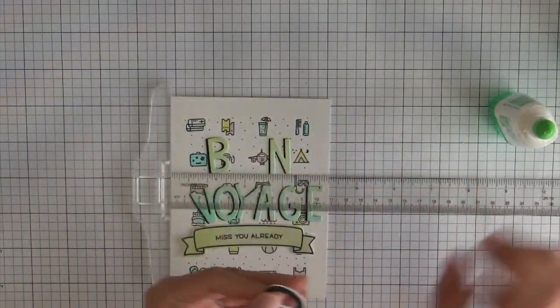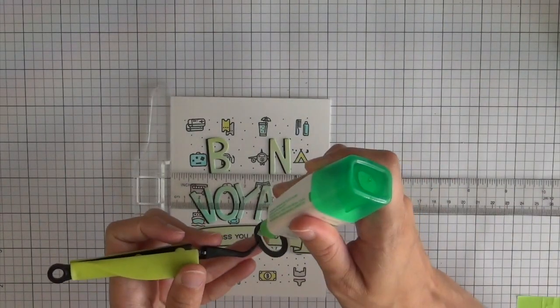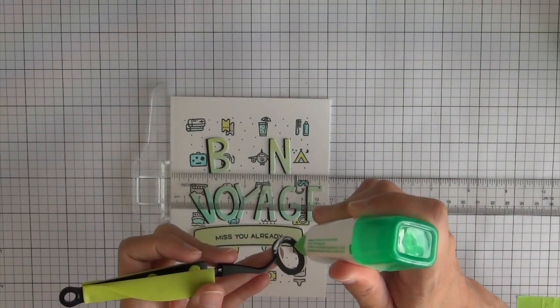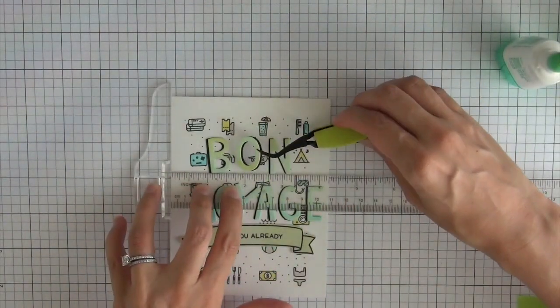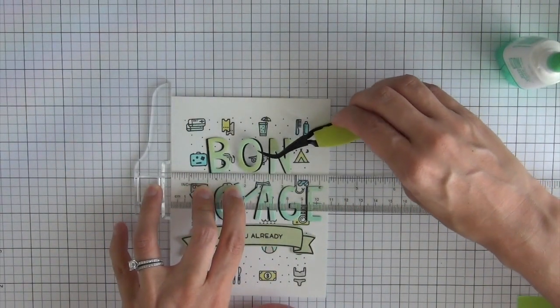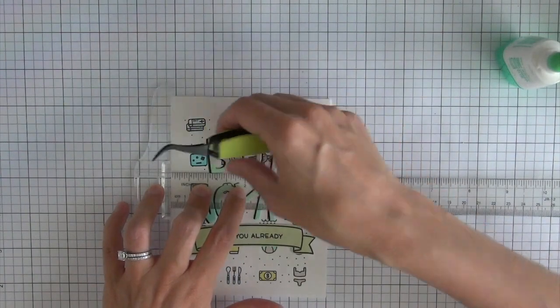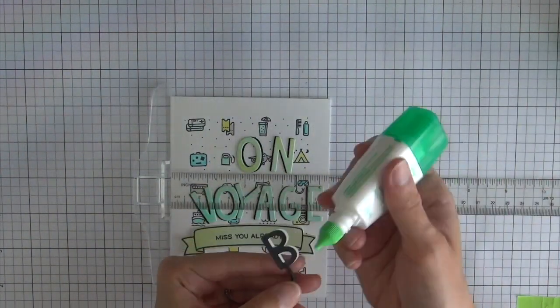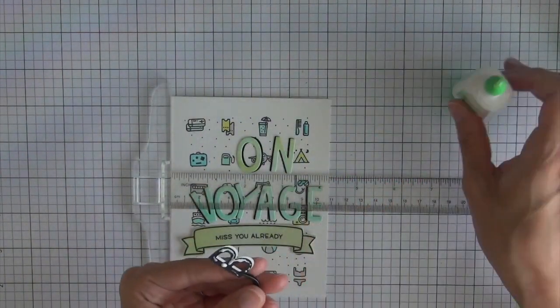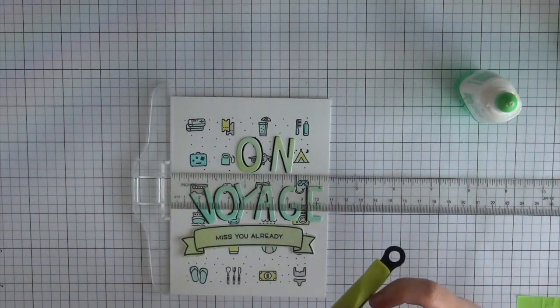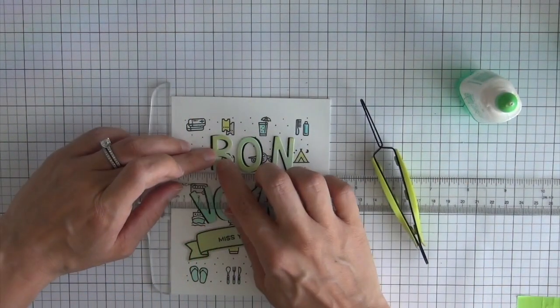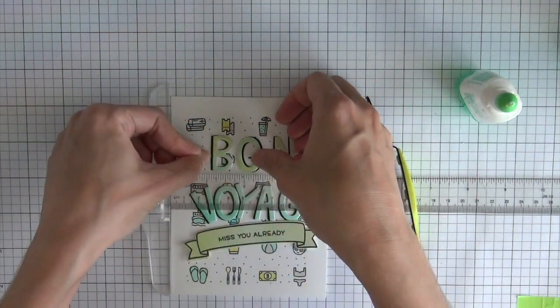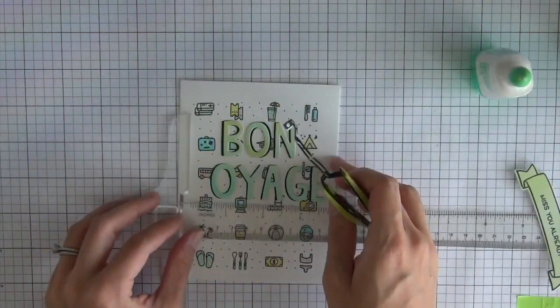I'm going to take my T-squared ruler and make sure that everything is nice and straight on the card and centered as well. I'm going to take the middle portion of the first word and center that with the ruler, and then I can space the other two letters around that just so that everything is nice and evenly spaced. That's what I did for both the top word and the bottom word.